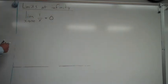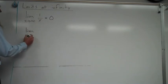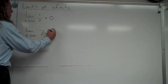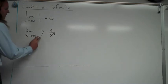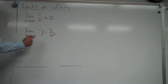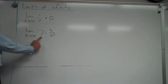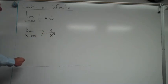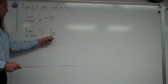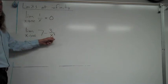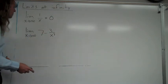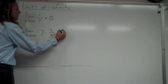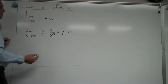We can use this idea to help with other limits, like the limit as x approaches infinity of 7 minus 3 over x squared. I'll look at the 7 and 3 over x squared separately. The limit of 7 is just 7 — there's no variable, so it won't change. For 3 over x squared, 3 remains the same but the bottom gets huge, so that portion goes to zero. So that limit is just 7.